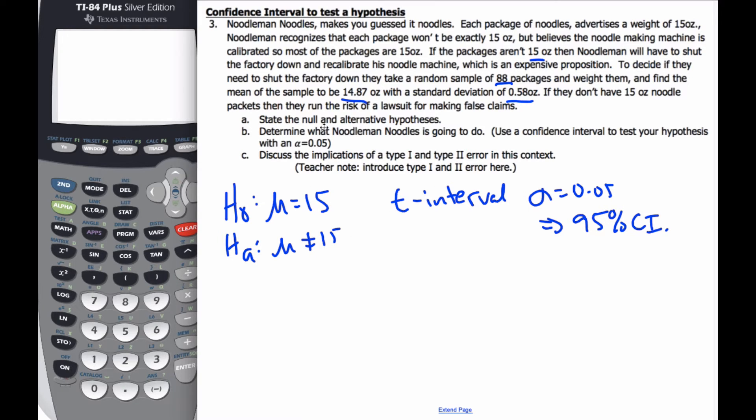Let's look at our numbers. We know x bar is equal to 14.87, S is equal to 0.58, N is equal to 88. Alpha is 0.05 and my degrees of freedom is going to be 87.